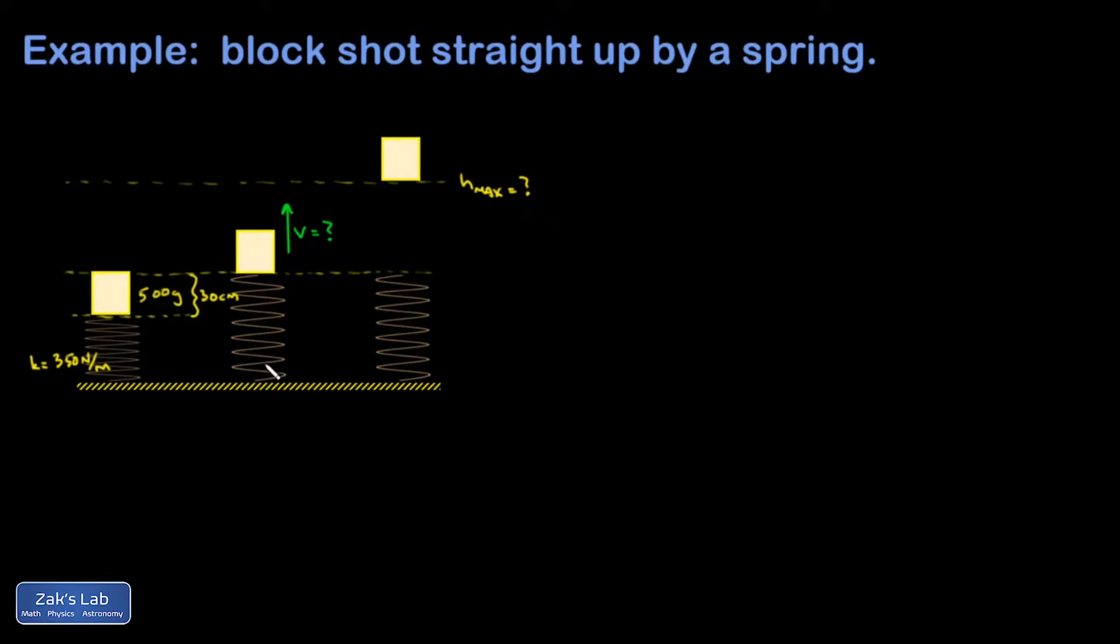And the spring uncoils and shoots the mass upward. The mass flies up into the air to some maximum height, and that's actually the first thing that I want to compute because it's actually the simplest. And then I also want to compute how fast was the block going right at this moment where it was released from the spring.